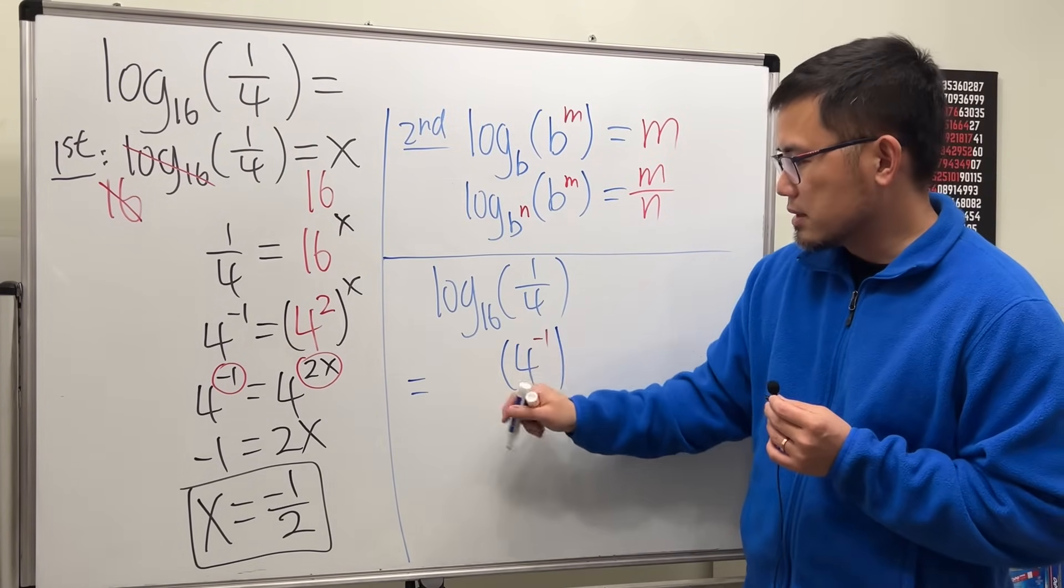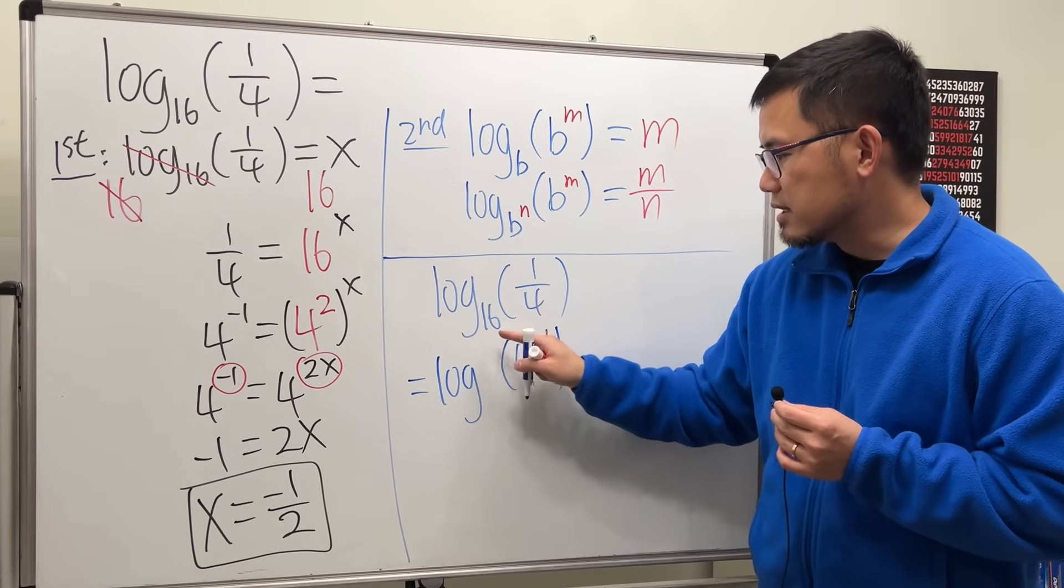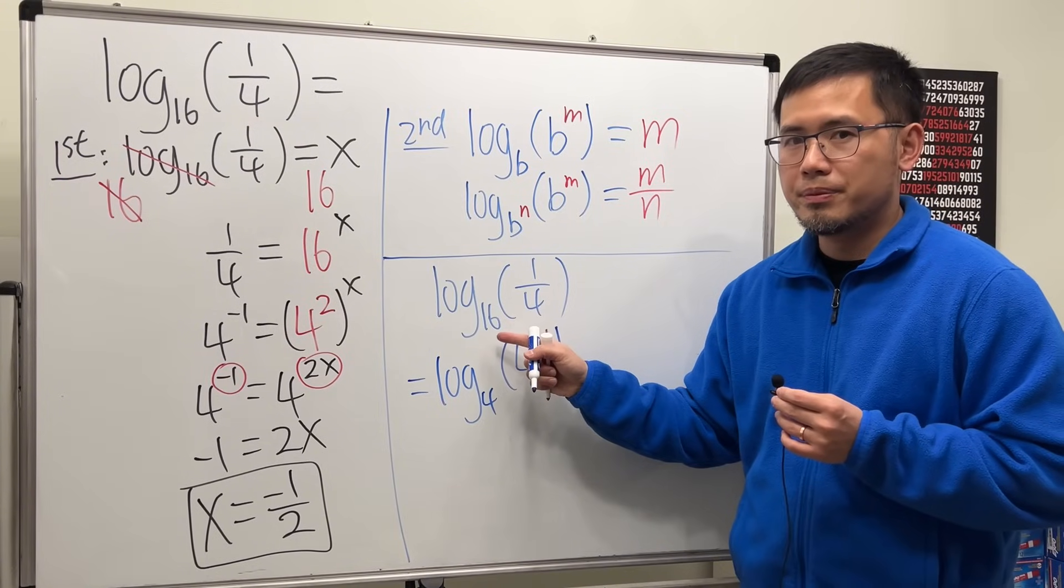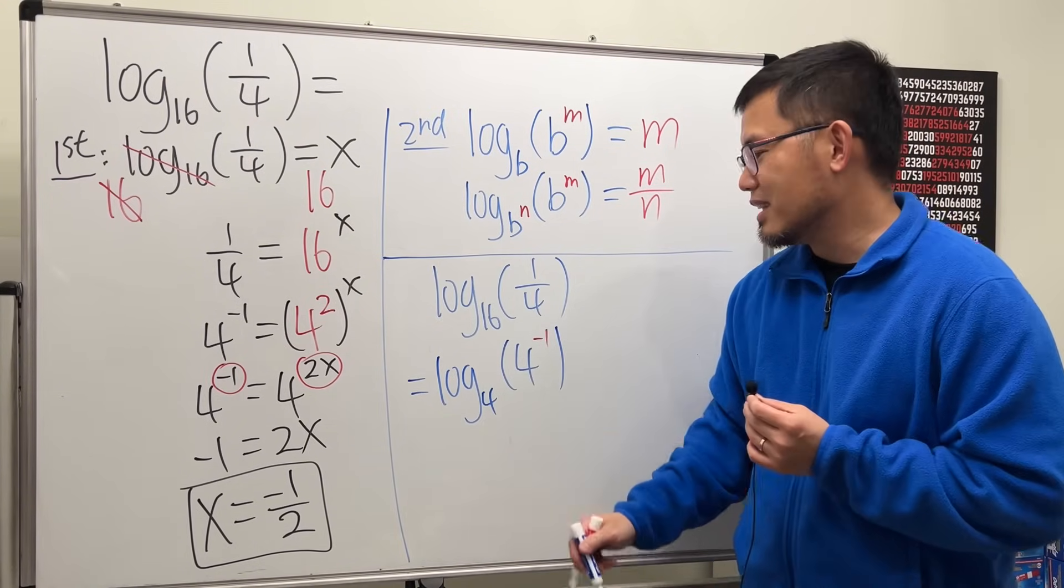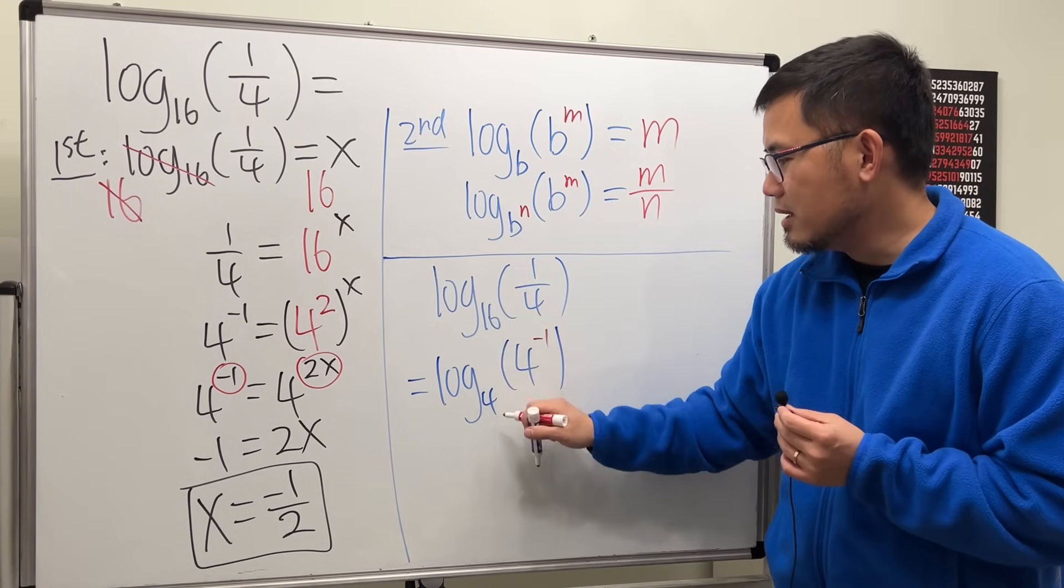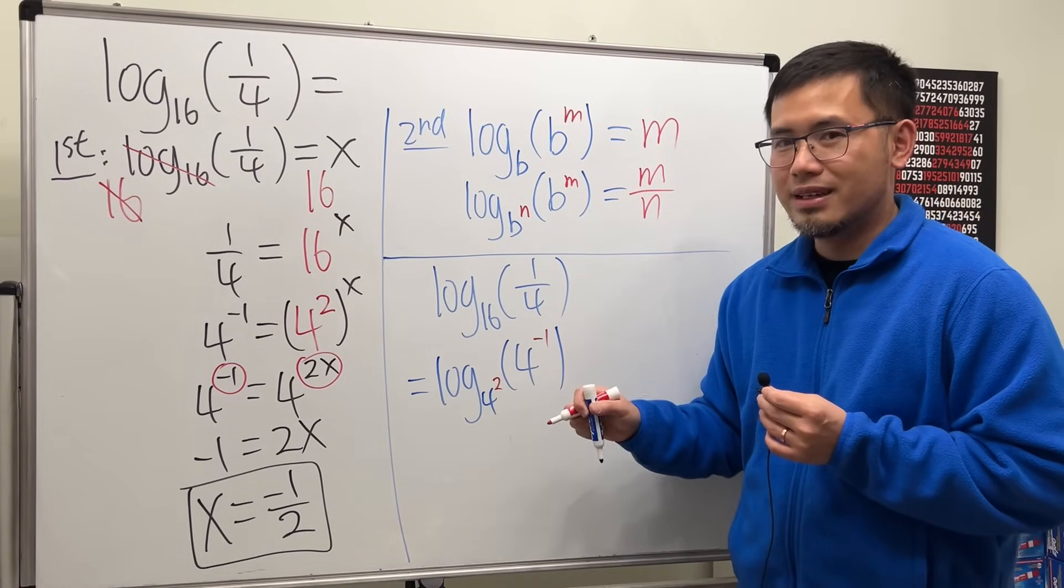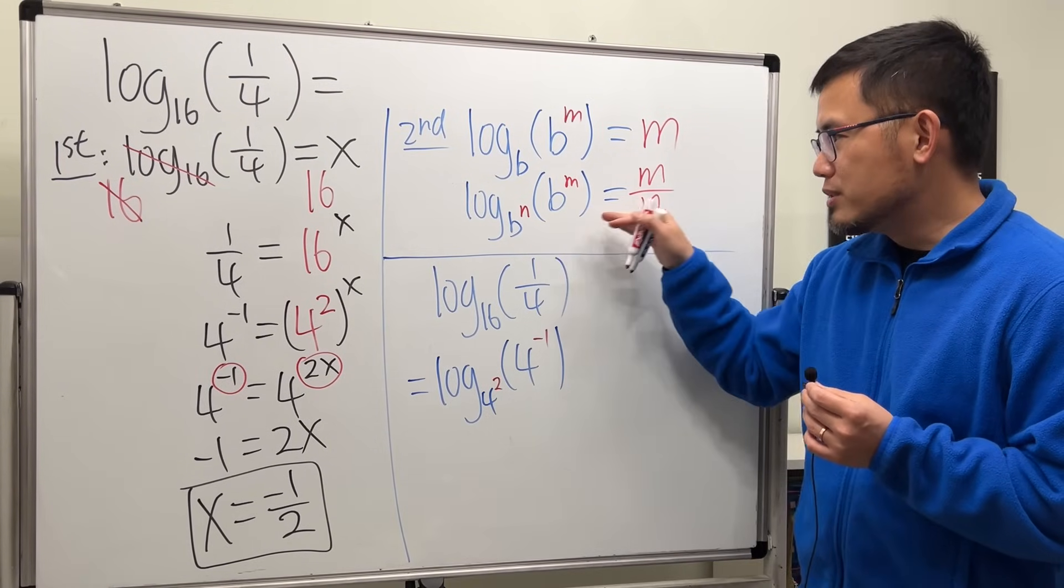So that means I would like to write the 16 as 4 to some power as well. 4 to the second power is 16. So this number 16 is 4 to the second power.